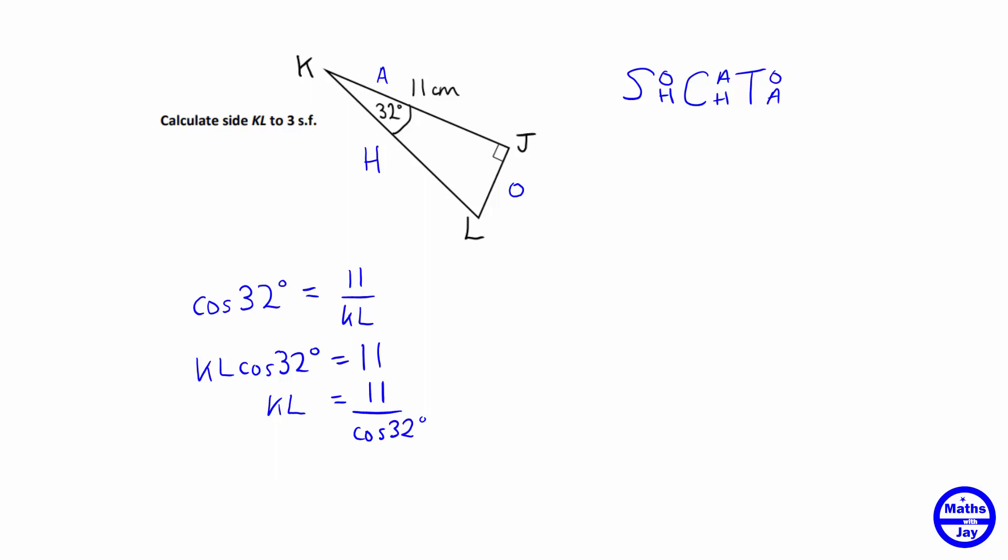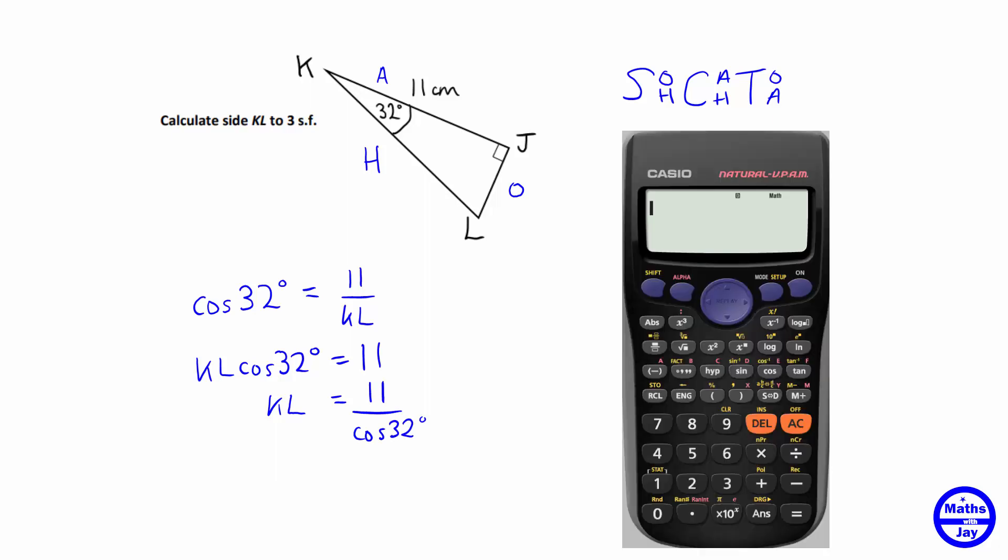So now we want to key that into our calculator. So we want a fraction and 11 divided by, and we could leave it like that but strictly speaking, we've got the bracket in, and that gives us 12.97 and so on.